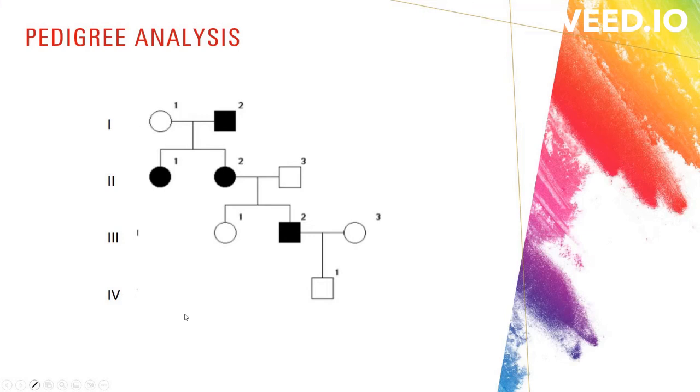Hey guys, today we are discussing pedigree analysis. First, I will tell you what pedigree analysis is. A pedigree chart is a family tree that shows the members of the family who are affected by a genetic trait. In this diagram, you can see individuals affected by a form of colorblindness.